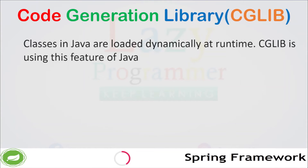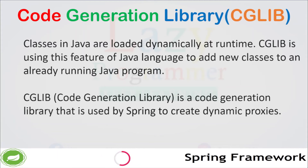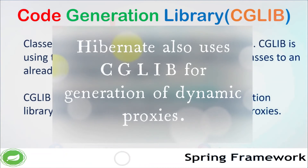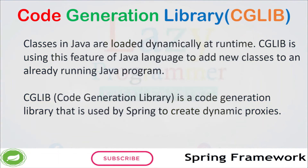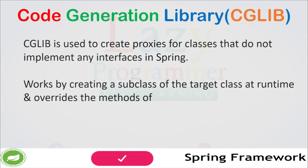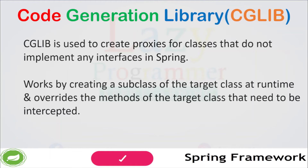Now let's understand a bit more about CGLib. Classes in Java are loaded dynamically at runtime, and CGLib uses this feature to add new classes to an already running Java program — those new classes are the proxy classes. Hibernate also uses CGLib for generating dynamic proxies. CGLib is a very powerful code generation library used by Spring to create dynamic proxies, specifically for classes that do not implement any interfaces. CGLib works by creating a subclass of the target class at runtime, and this subclass overrides the methods of the target class that need to be intercepted.